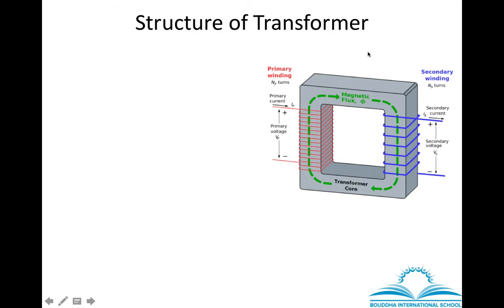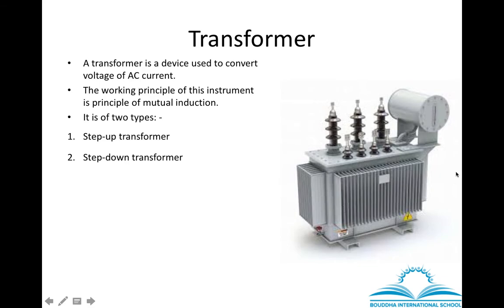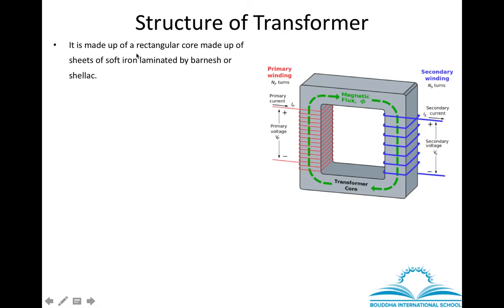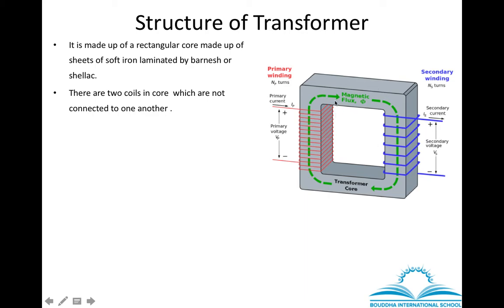Let's learn the structure of a transformer. Inside the box of a transformer you will find a rectangular core made up of sheets of soft iron or pure iron. These sheets are insulated — covered by a material called varnish or shellac. The transformer has two coils of wire that are also insulated. There is no connection between the coils of wire and the core, and there is no connection between the two coils of wire either.